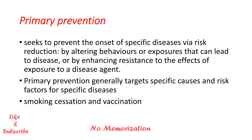Primary prevention seeks to prevent the onset of specific disease via risk reduction — by altering behaviors or exposures that can lead to disease, or by enhancing resistance to the effect of exposure to a disease agent. Primary prevention generally targets specific causes and risk factors for particular diseases. Again, this is super important: specific causes or specific disease.